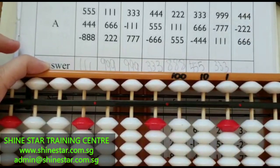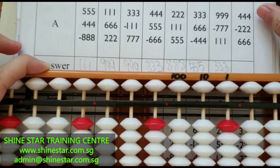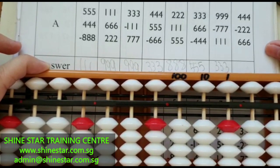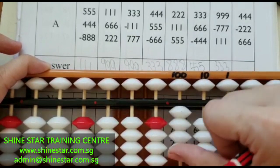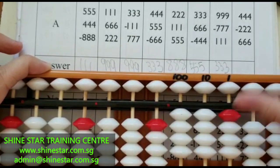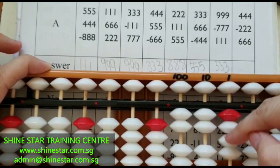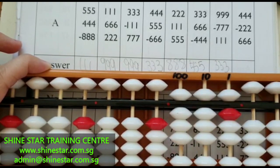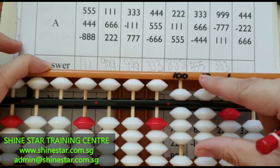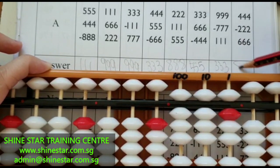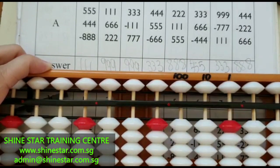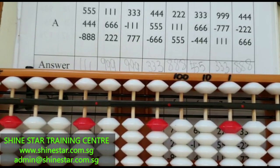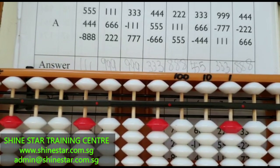Let's proceed to the last question: 444 minus 222 plus 666. The answer is 888. Our lesson ends here. Hope to see you in our next lesson. Good day!